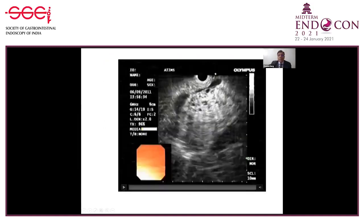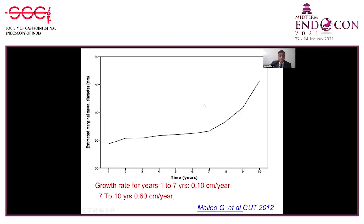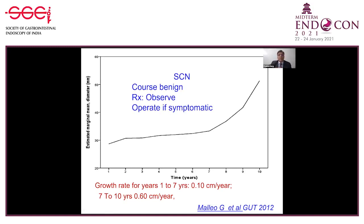This is how serous cyst adenoma looks on EUS — a microcystic appearance very typical of SCN. The growth rate is actually very slow in SCN — initially about 0.6 centimeters per year. We really don't need to worry most of the time because the course is benign. We observe these patients, and very rarely do they need surgery once they become symptomatic. The malignant potential is extremely low in serous cyst adenoma.